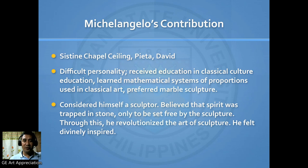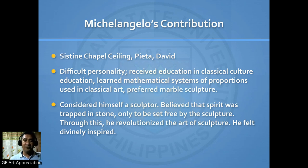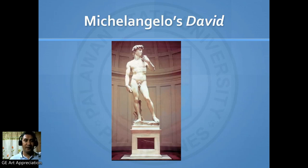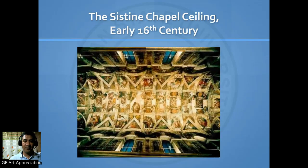Let's take a look at Michelangelo's contribution. Michelangelo is very famous for his contribution to the Sistine Chapel — the ceiling of the Sistine Chapel — as well as the Pietà and the David. He considered himself a sculptor, and he believed that the spirit was trapped in stone, only to be set free by the sculptor. Through this belief, he revolutionized the art of sculpture. He felt divinely inspired. These are the works of Michelangelo: David, and the ceiling of the Sistine Chapel.